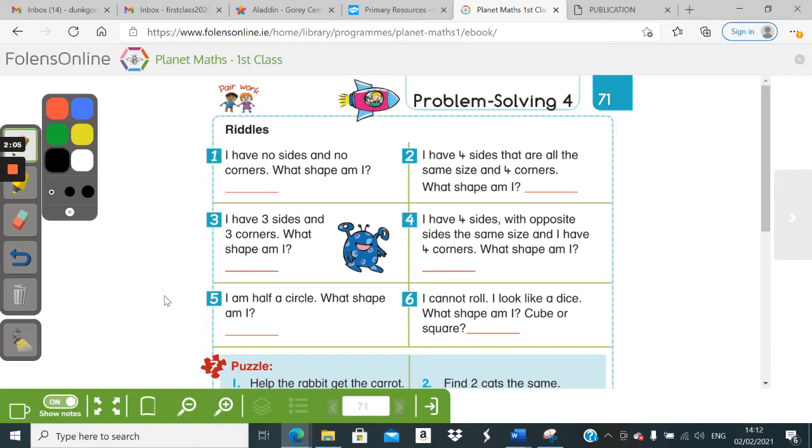There are actually two. If you really know your shapes, I could accept that one. Number three, I have three sides and three corners. What shape am I?